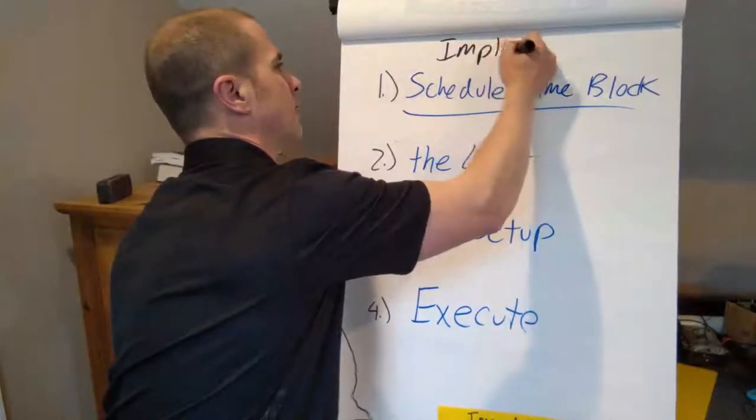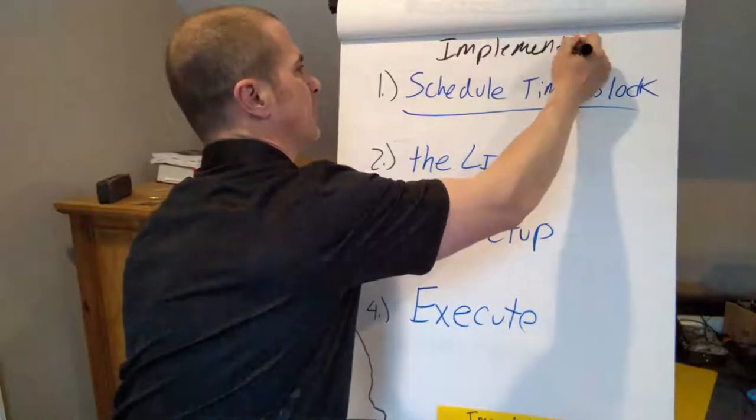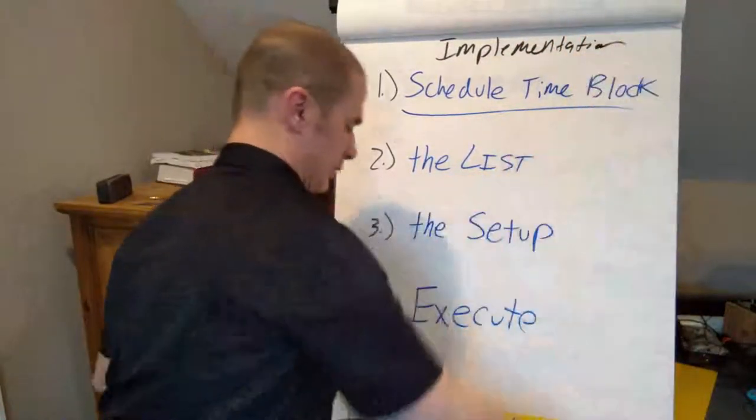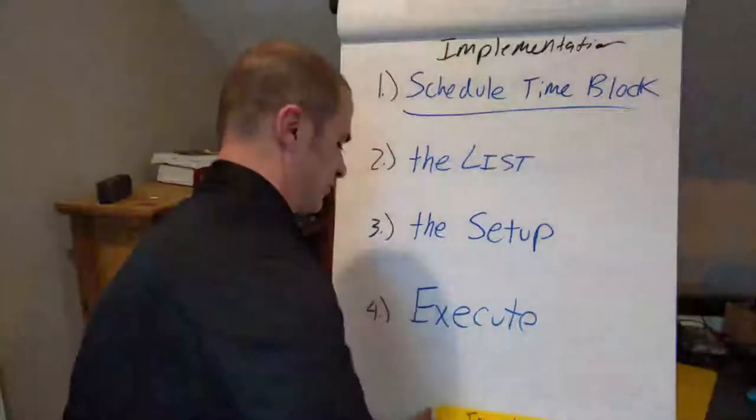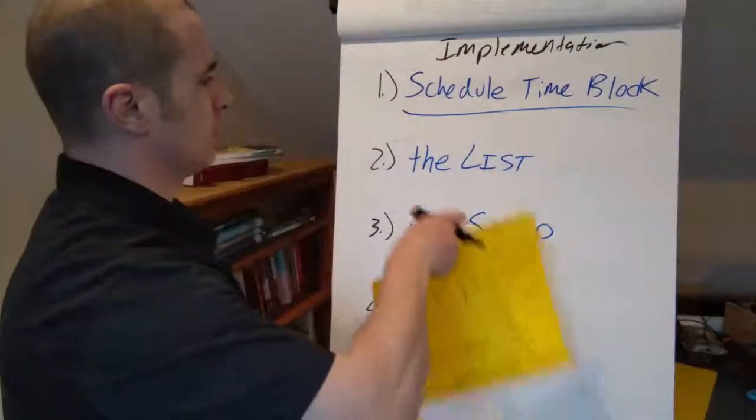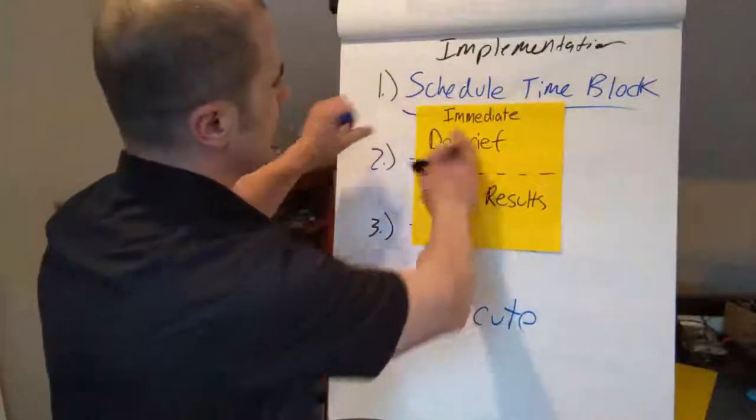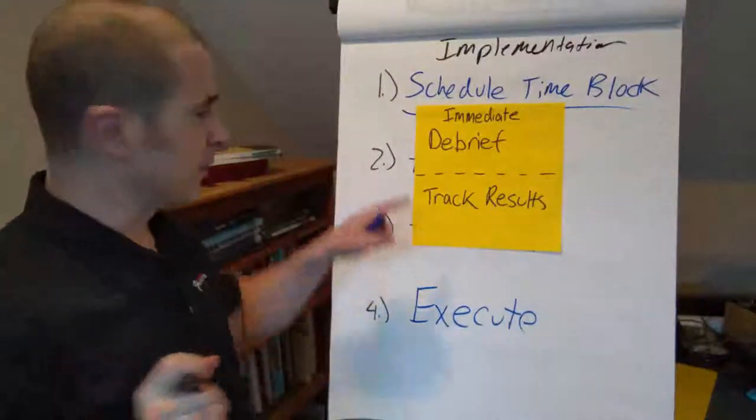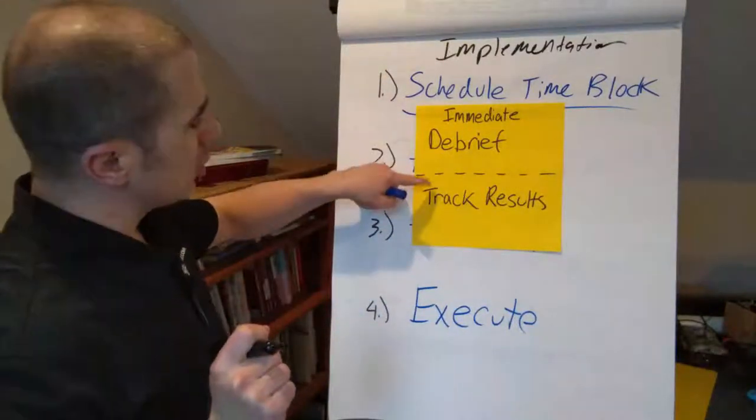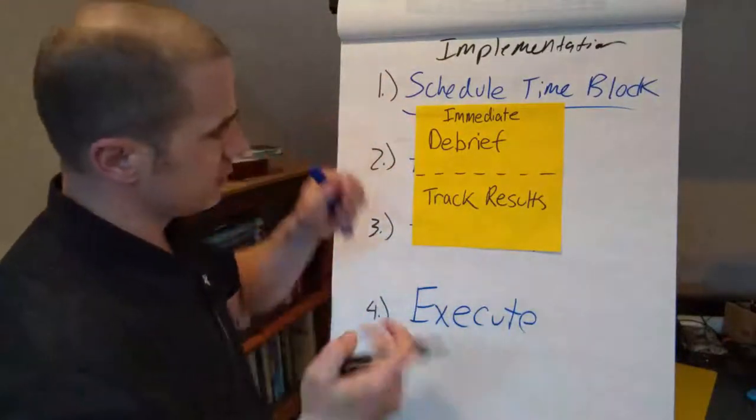And then last piece. And this is important. And I have my little yellow note. Hopefully I can peel it off. The last thing is an immediate debrief with everybody. Track the results after the activity.